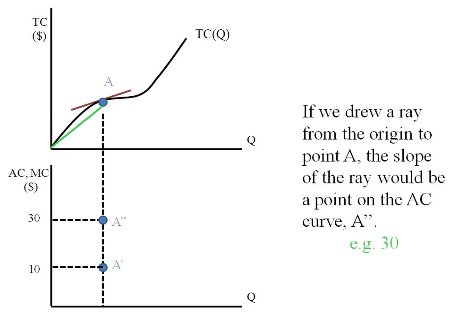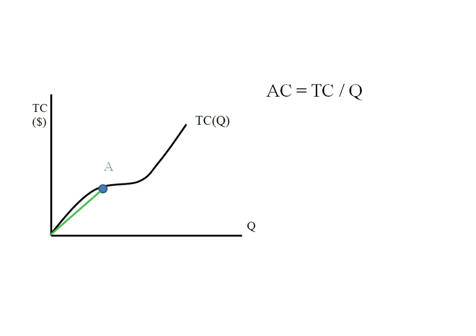Average cost, as we know, is found by taking total cost divided by output. Previously, we said it can also be the slope of the ray between the origin and the particular point we're looking for.